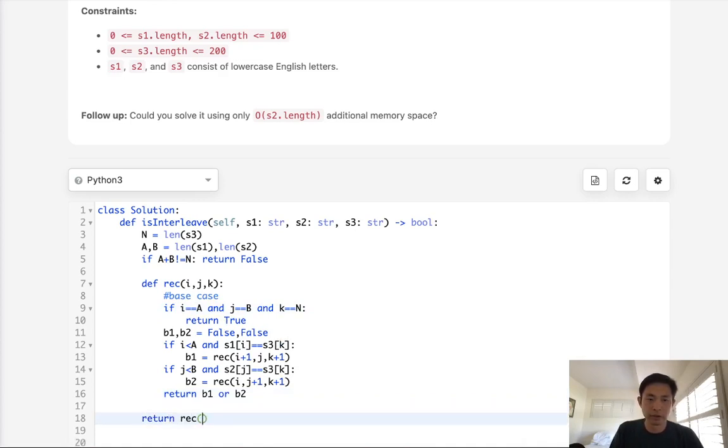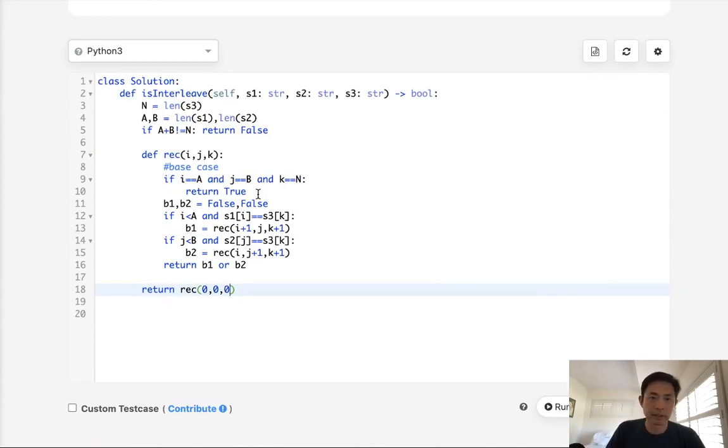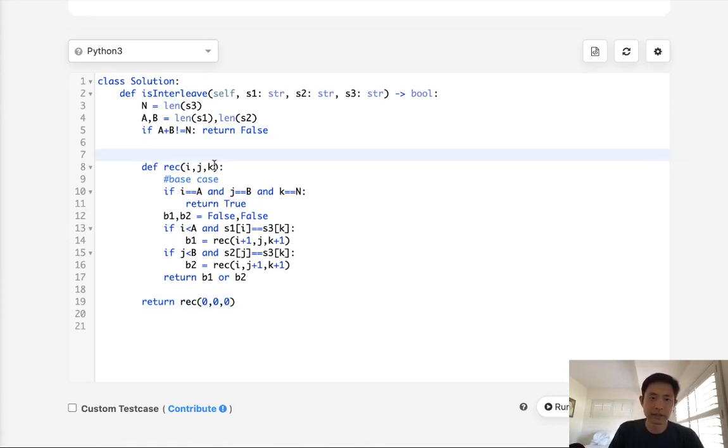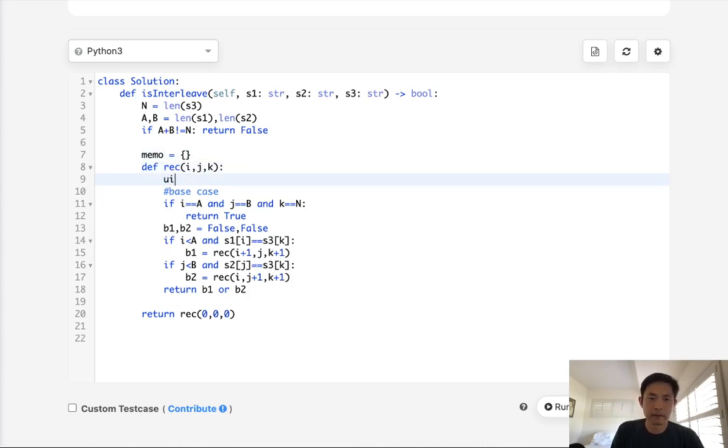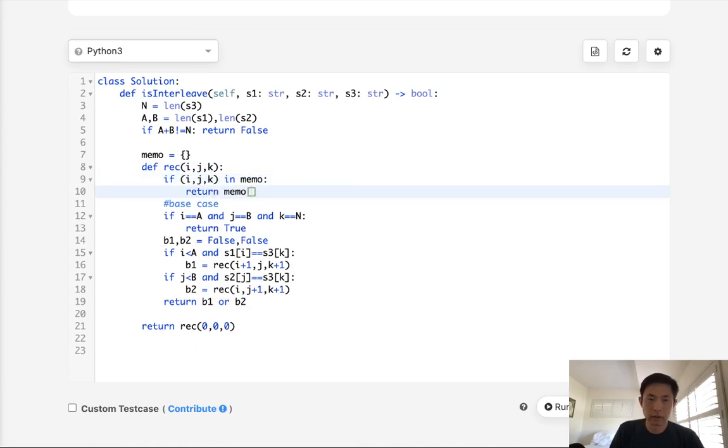Finally just return the recursion, let's start at zero zero zero for all of these and this would work. Now unfortunately this is going to be exponential time complexity but we could avoid that by using some memoization because we can potentially recall the same ijks multiple times. So what we'll do is have memoization here. We'll say if ijk is in memo, just return whatever's in there. Memo, then return memo this, otherwise add it at the very end b1 or b2. Okay so let's see if this works. Should return true and that does, there we go.